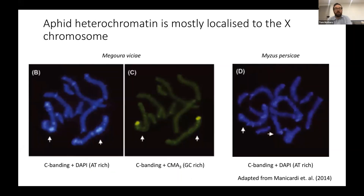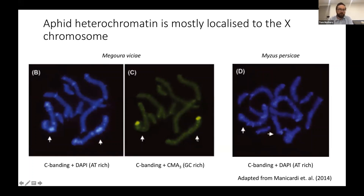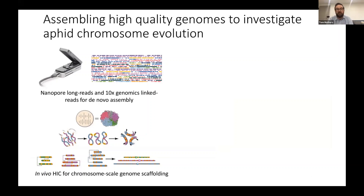Aphids also have a weird genome architecture. They have holocentric chromosomes which don't have localized centromeres, and classical cytogenetics has shown that heterochromatin — the highly densely packed repetitive regions of the genome — is localized predominantly on the X chromosome. You see typical bands of heterochromatin across the X chromosome but not on the autosomes, apart from some telomeric regions. The X chromosomes also contain very GC-rich regions with big tracts of ribosomal RNA genes. To understand all these processes, we need high quality genome assemblies, and that's what we've started to generate.